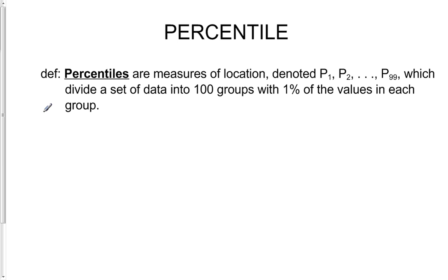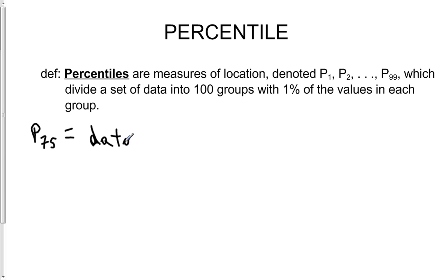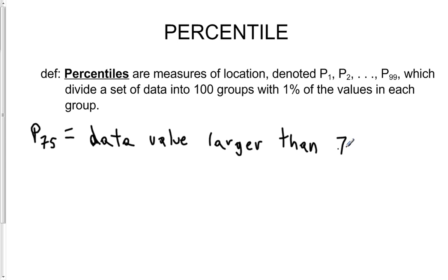For example, the value that we would call P75 is the data value that is greater than 75% of the data. P75 separates basically the bottom 75% from the top 75%, so this is larger than 75% of the data.